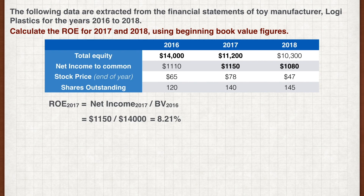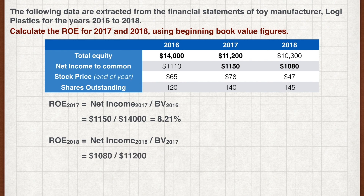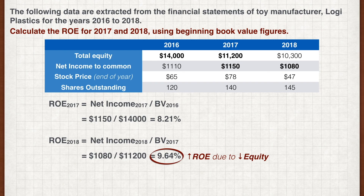Likewise, for 2018, we divide the 2018 net income by the 2017 book value. We get an ROE of 9.64%. Notice that even though the ROE has increased, this is an effect of a drop in equity rather than an increase in net income. This is not a positive sign for the company.